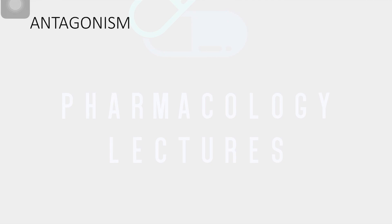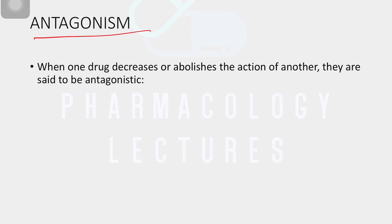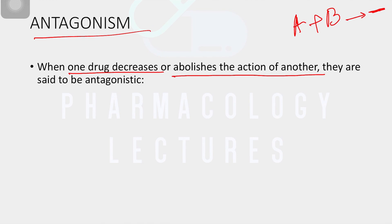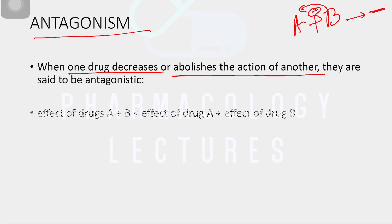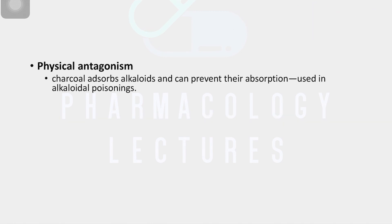Now we look at another type of combined drug action — antagonism. If we combine two drugs and there is a decrease in or nullification of the response, that is called antagonism. Antagonism means one drug decreases or abolishes the action of the other. So effect of drug A plus B is less than effect of drug A plus effect of drug B.